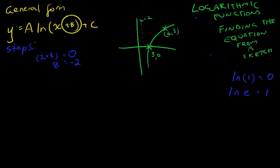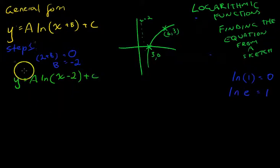So we have a b value of negative 2. An easy way to remember it is just that the asymptote's going to be a b value, but with the different sign. So if your asymptote's positive 2, your b value's going to be negative 2. So with that information, we can do one step here. We know that y equals A ln(x minus 2) plus C. So that's step one out of the way.